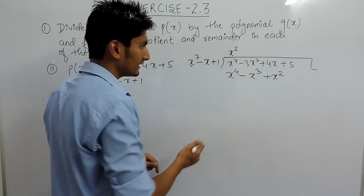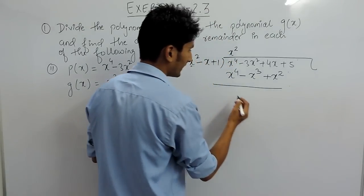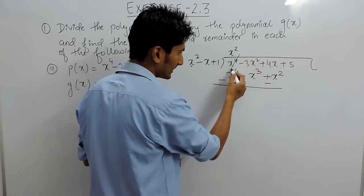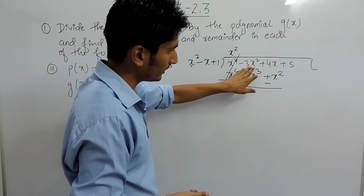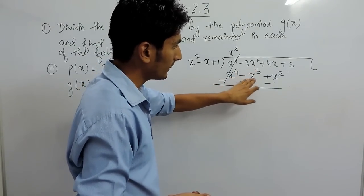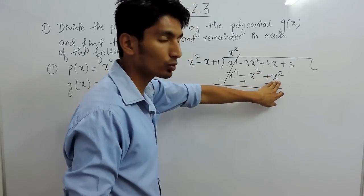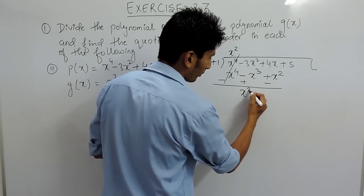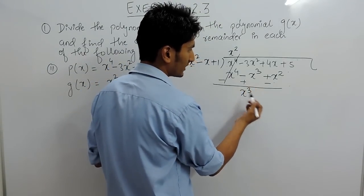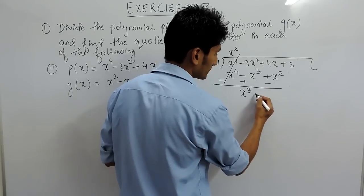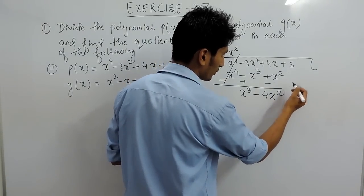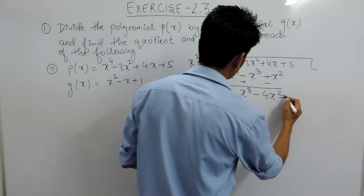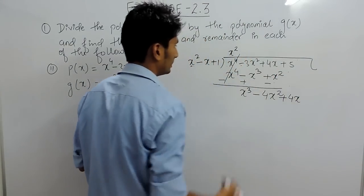After that you have to subtract these. For subtracting you have to change the sign. So this positive and this negative cancel out. Here it is 3x squared and here it is x cubed, so those can't combine. But 3x squared can combine with x squared. So x cubed will be copied as is with positive sign, but minus 3 and minus x squared gives minus 4x squared, because minus minus is plus, so 3 plus 1 is 4. After that copy the rest.